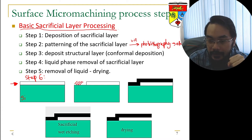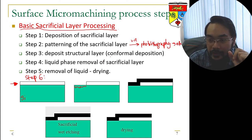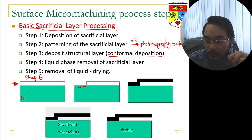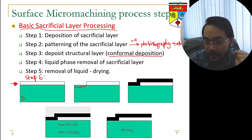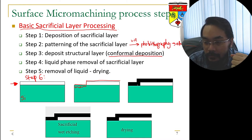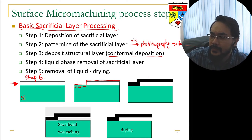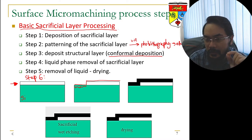Once you have the exposed region, step three is to deposit your structural layer. Normally, this deposition is conformal deposition — a deposition of thin film whereby the thin film follows the topography of the substrate surface. Because of the patterning done earlier, there are step-like features, and the structural layer must follow the shape and texture of the surface. That's what we mean by conformal deposition.